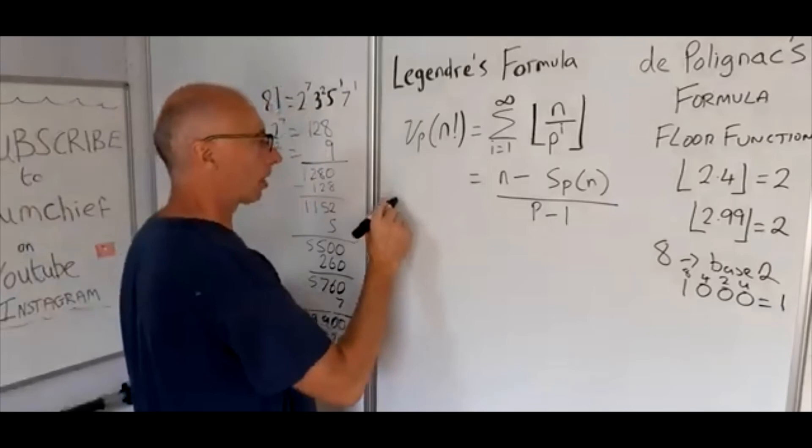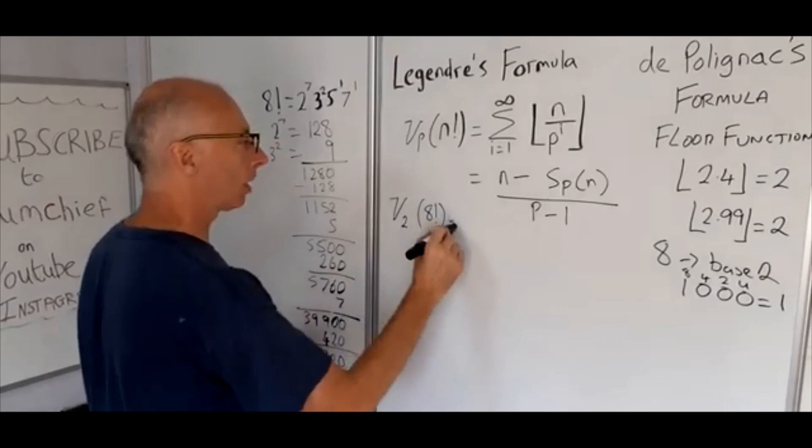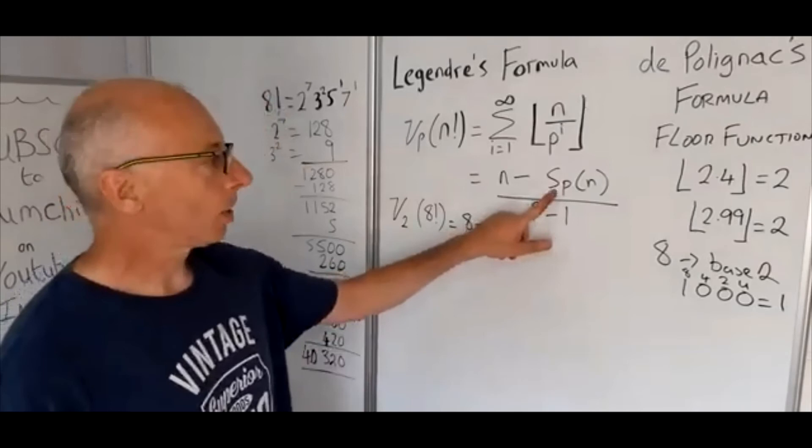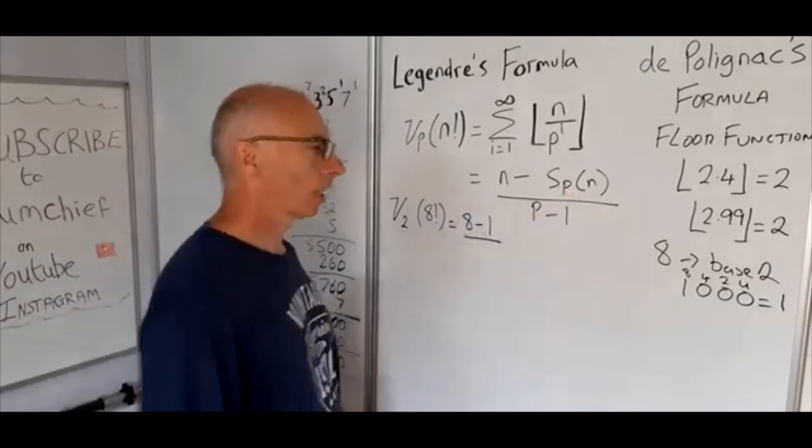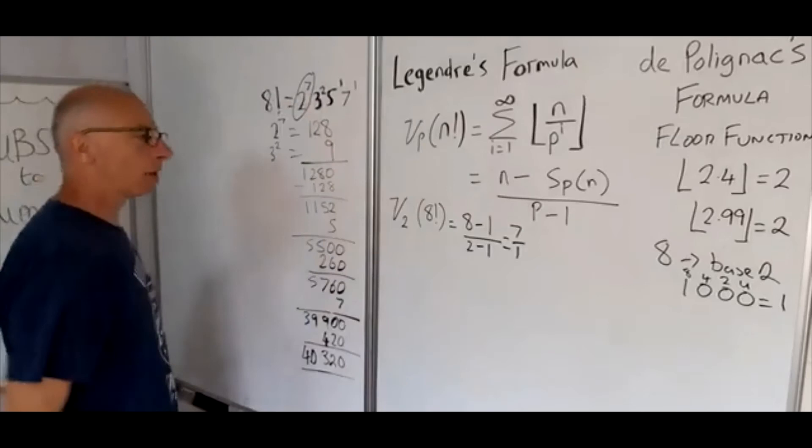So let's just try it, let's see if it works. Let's try p-adic value for 8 factorial, and then we change that to the 2 because that's what we're interested in. Equals 8 minus sum of the digits of 8 in base 2, that's just going to give us 1. The prime number that we're concerned with is 2, 2 minus 1, so that's just going to give us 7 over 1. So that checks that box.